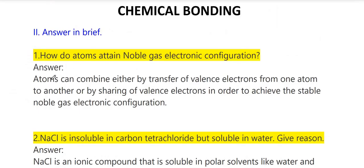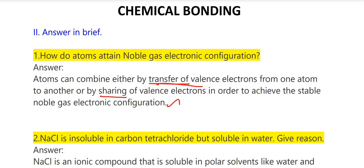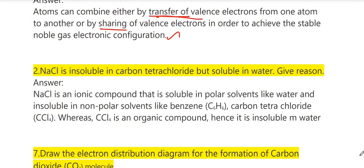Answer briefly. First question: how do atoms attain noble gas electronic configuration? Atoms can combine either by transfer of valence electrons from one atom to another, or by sharing of valence electrons, in order to achieve the stable noble gas configuration. So it is either by transfer or by sharing.